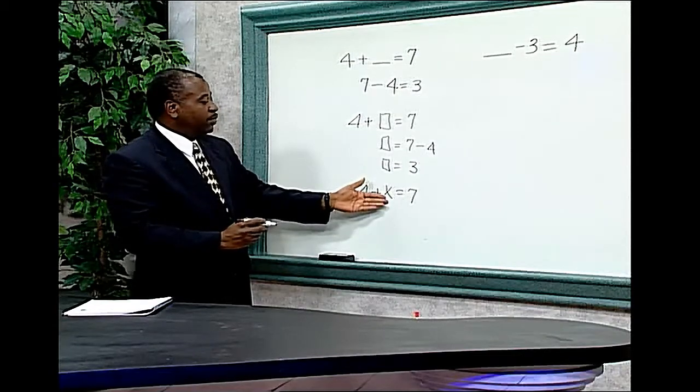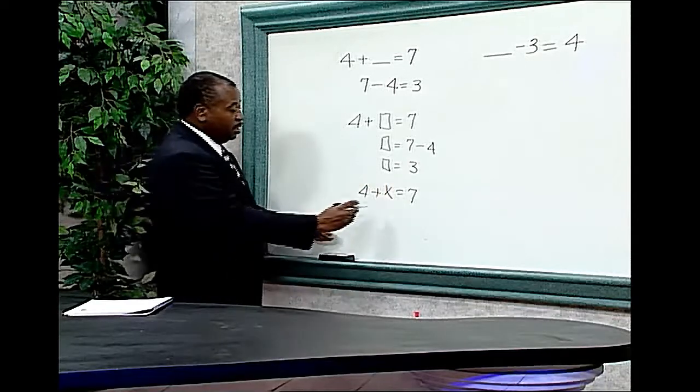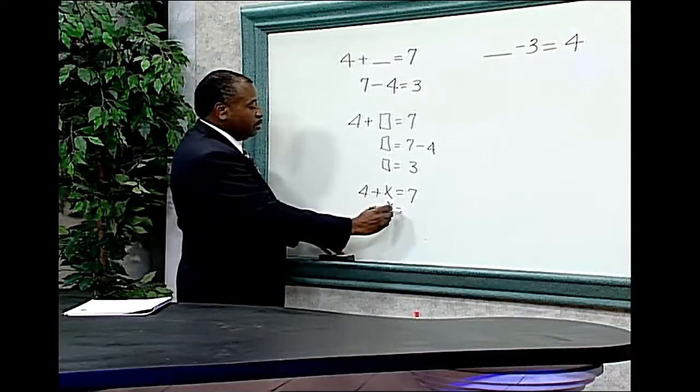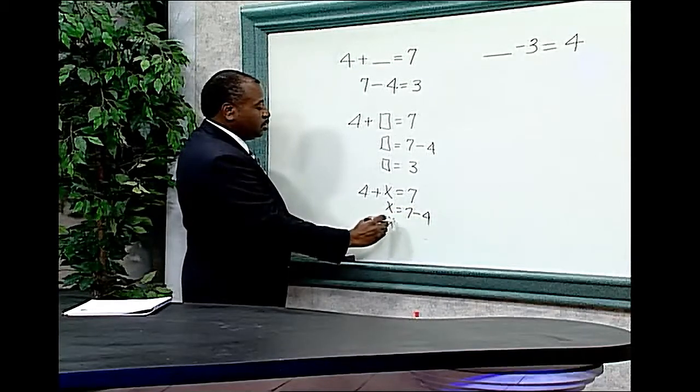What number when replaced with the x and added to 4 equals 7? x would equal 7 minus 4, x equals 3.